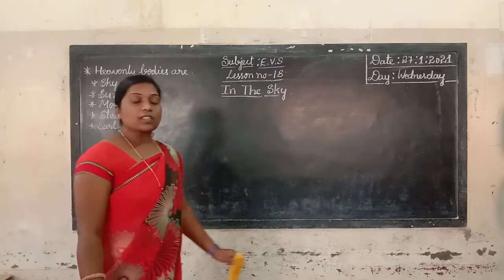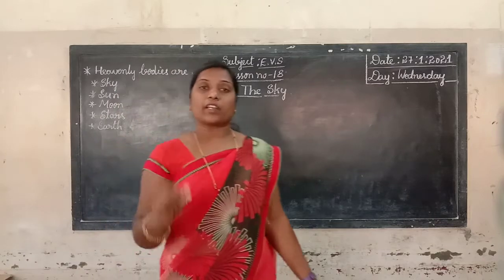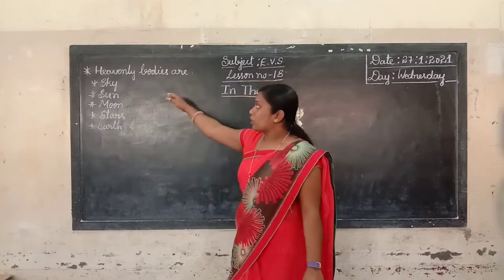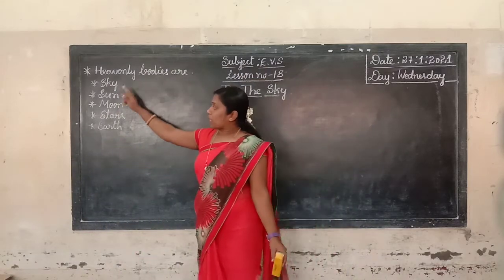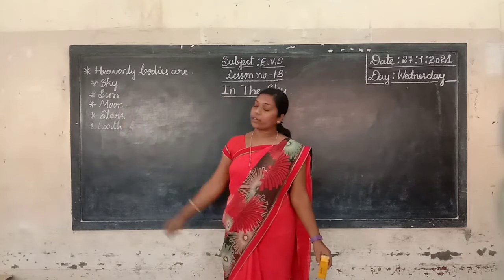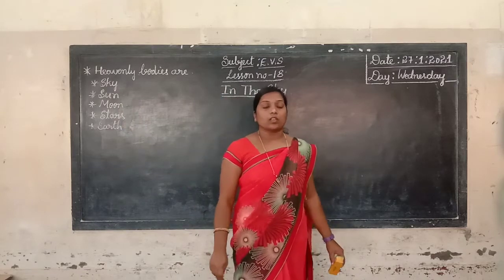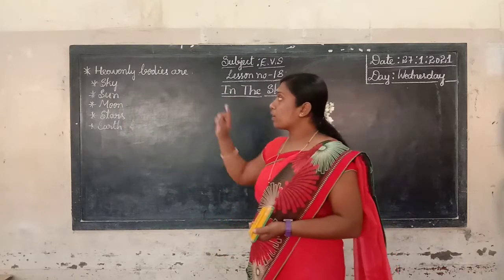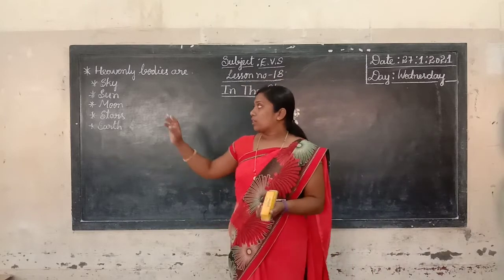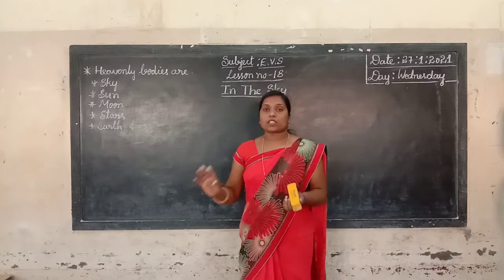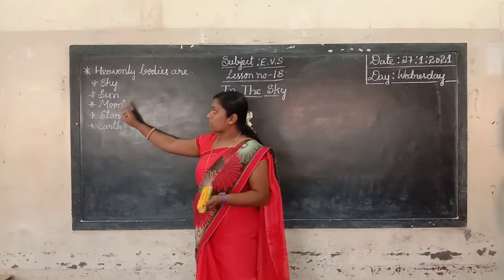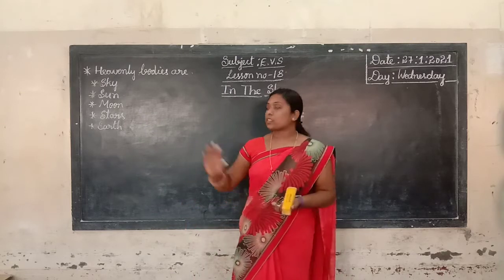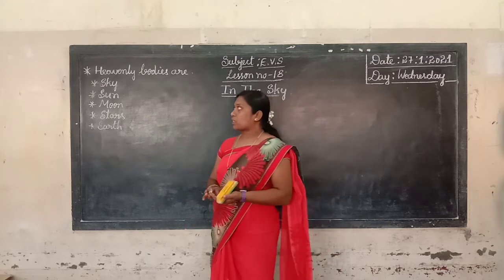So these are kinds of heavenly bodies. Heavenly bodies are sky, sun, moon, stars and earth. So now in this class we are going to learn about sky, sun, moon, and stars also.